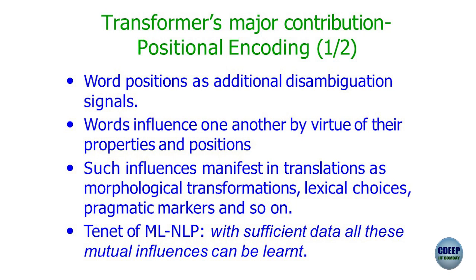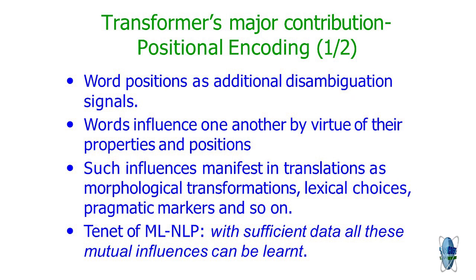Transformer's major contribution is positional encoding. Attention was proposed before, in Bahdanau 2015. What Vaswani et al. added is the notion of positional encoding to increase NLP effectiveness, improve translation quality, and reduce training time. Position is an additional disambiguation signal: if there is doubt about who is the agent or object, we disambiguate by looking at relative position — left or right of the verb. Words influence one another by virtue of their properties and positions. Properties are encoded as word embeddings.